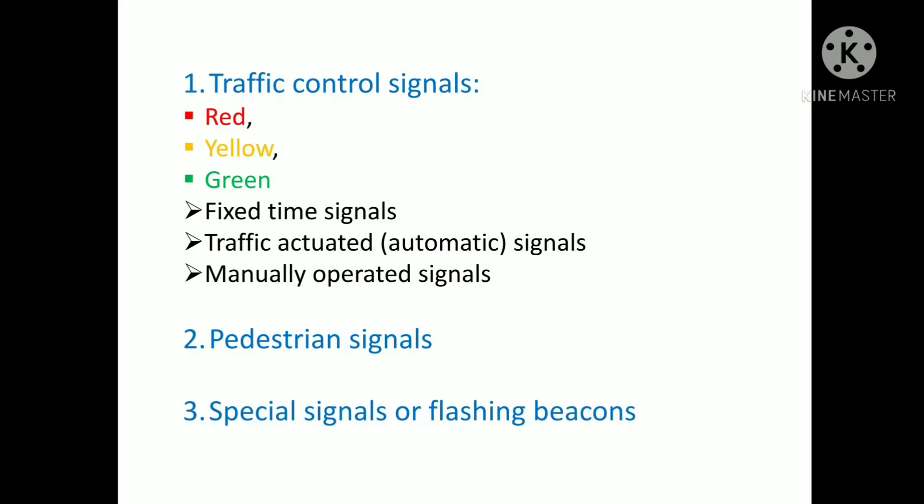Now, traffic actuated signals. In these signals, the timings of the phase and the cycle are changed according to traffic demand. In semi-actuated signals, the normal green phase of a traffic stream may be extended up to a certain period of time for allowing the vehicles to clear off the intersection. In fully actuated signals, computers assign the right of way for the traffic movement on the basis of traffic flow demand.